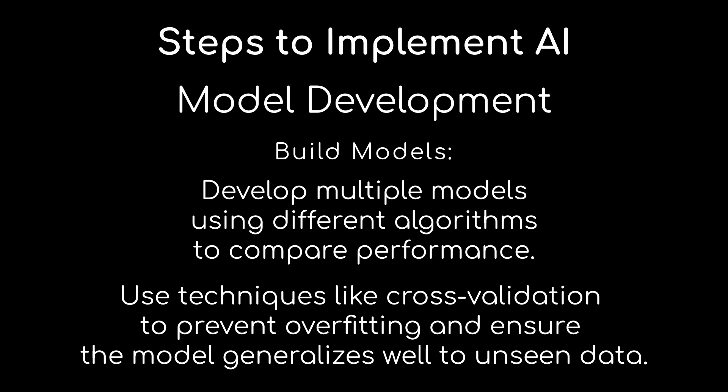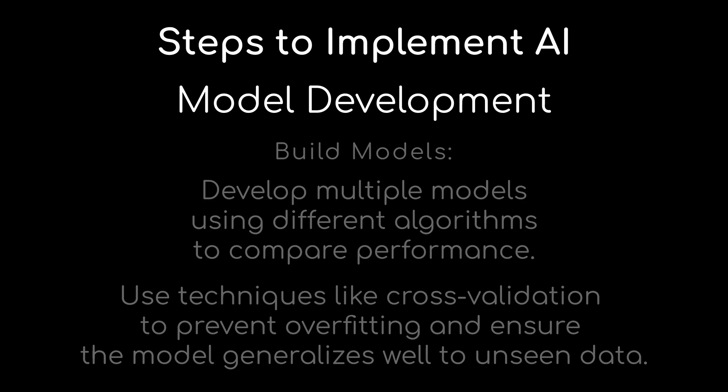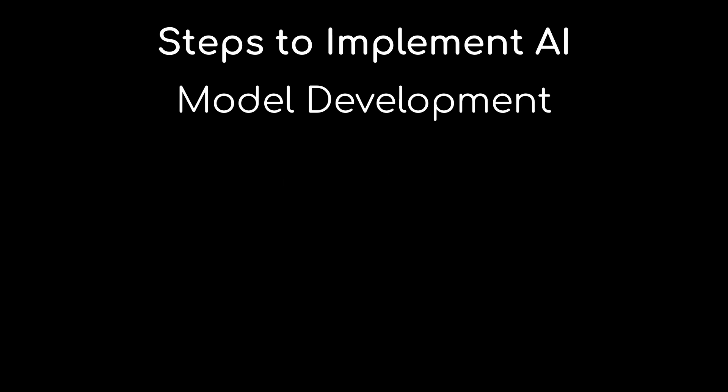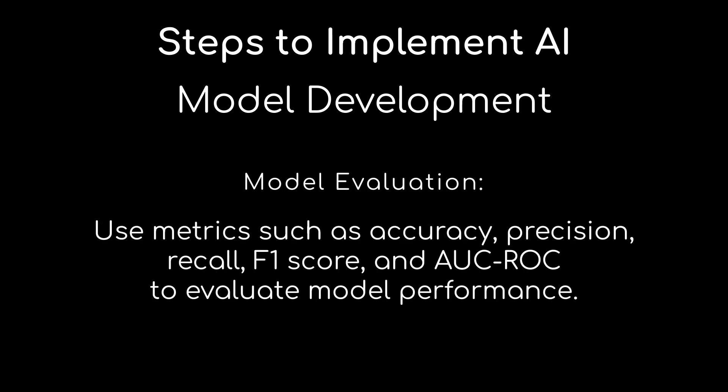We also want to make sure the model generalizes well to unseen data, accommodating new data that we may bring in for further training. We're going to look at hyperparameter tuning — fine-tuning model parameters like learning rate or regularization — to optimize model performance. Finally, we're going to evaluate the model using metrics like accuracy, precision, recall, F1 score, and AUC-ROC. All of these tools can be used in many open-source toolkits and frameworks, and this is really data science and machine learning 101.